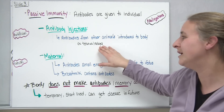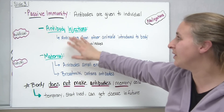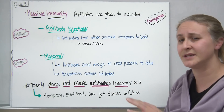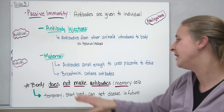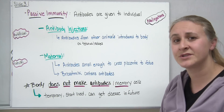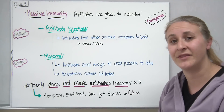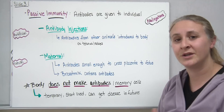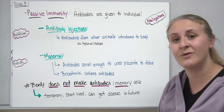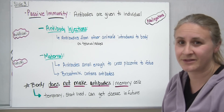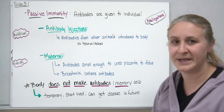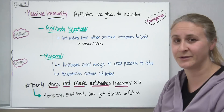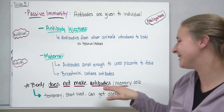One example is tetanus vaccines, which have at some point used antibodies made by horses. You also get passive immunity from your mother — antibodies are small enough to cross through the placenta to the fetus, and breast milk can also contain antibodies. So a pregnant or nursing mother can pass on the antibodies her body has made to the fetus or newborn, giving them some immunity until their own immune system develops or they receive vaccinations. This is a natural form of passive immunity.